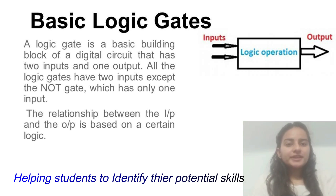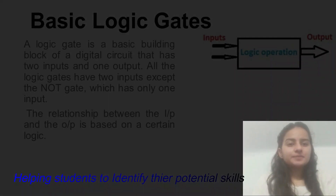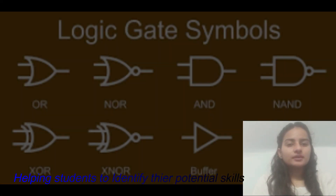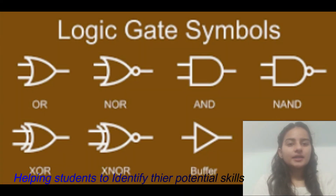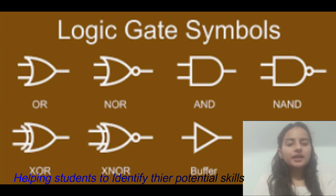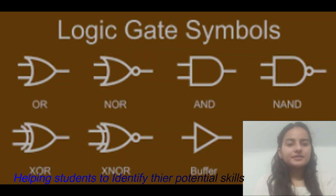Logic gates can be of 7 types: AND, OR, XOR, NAND, NOR, XNOR, and NOT gate — which we will discuss.